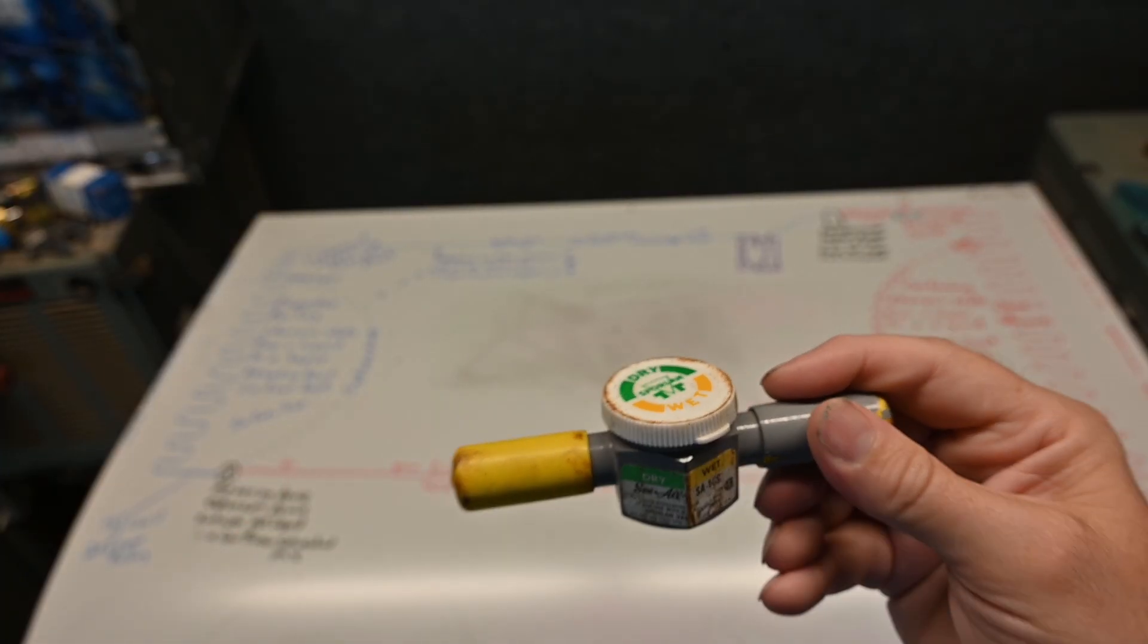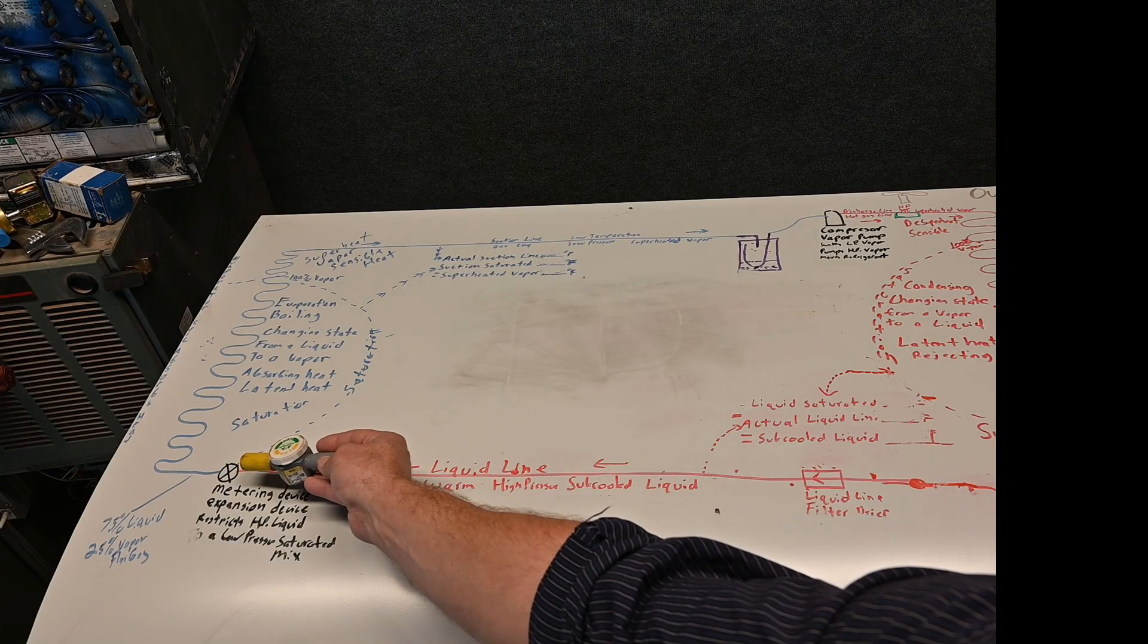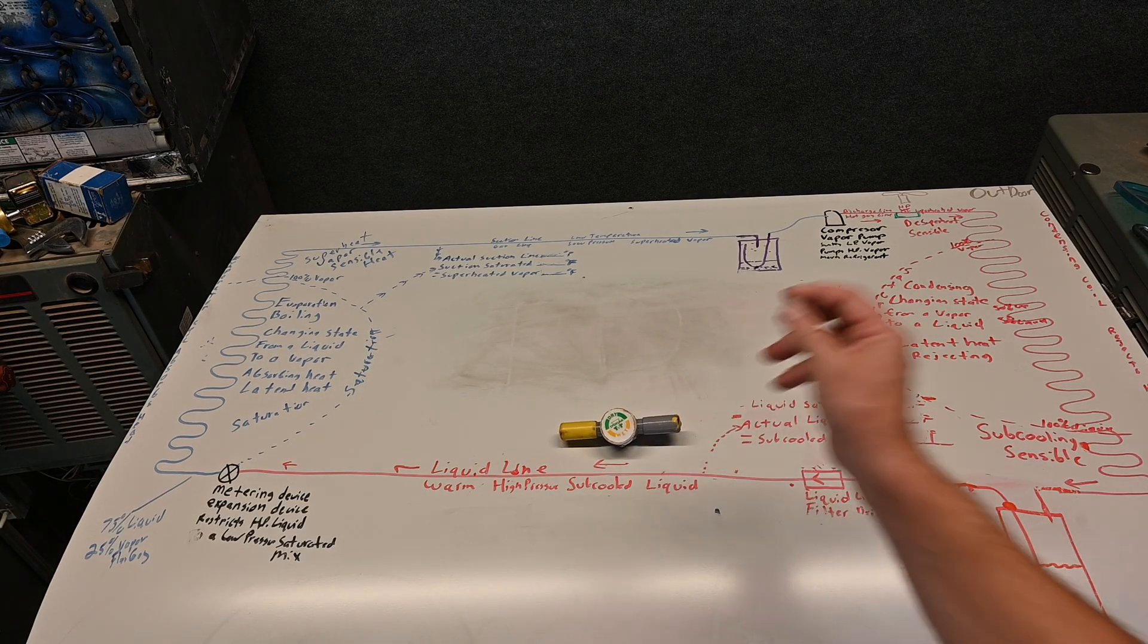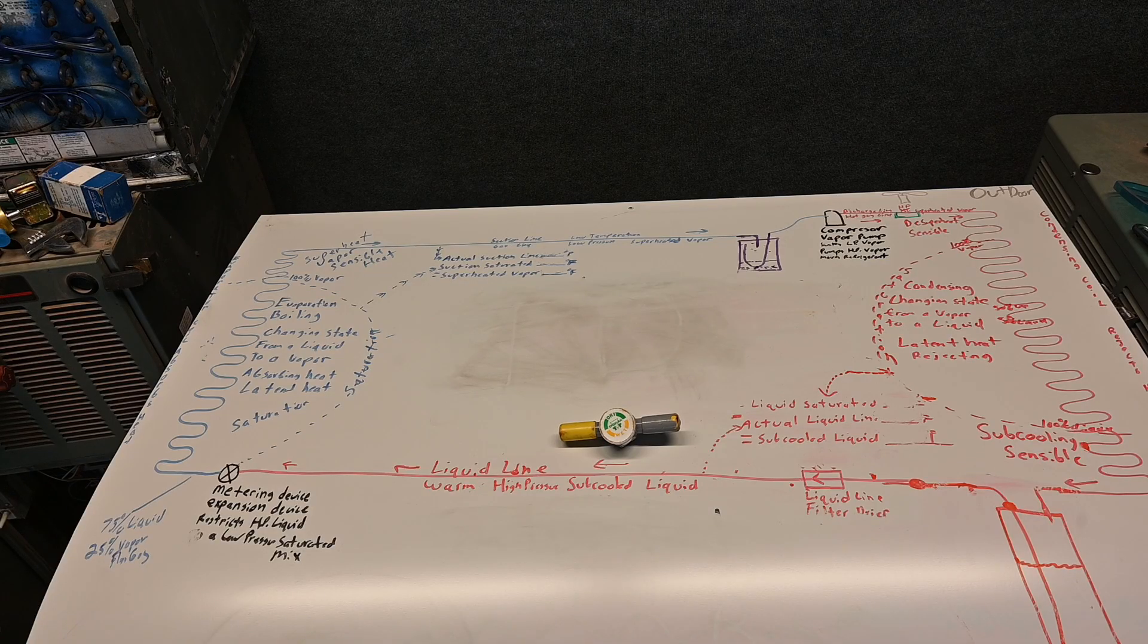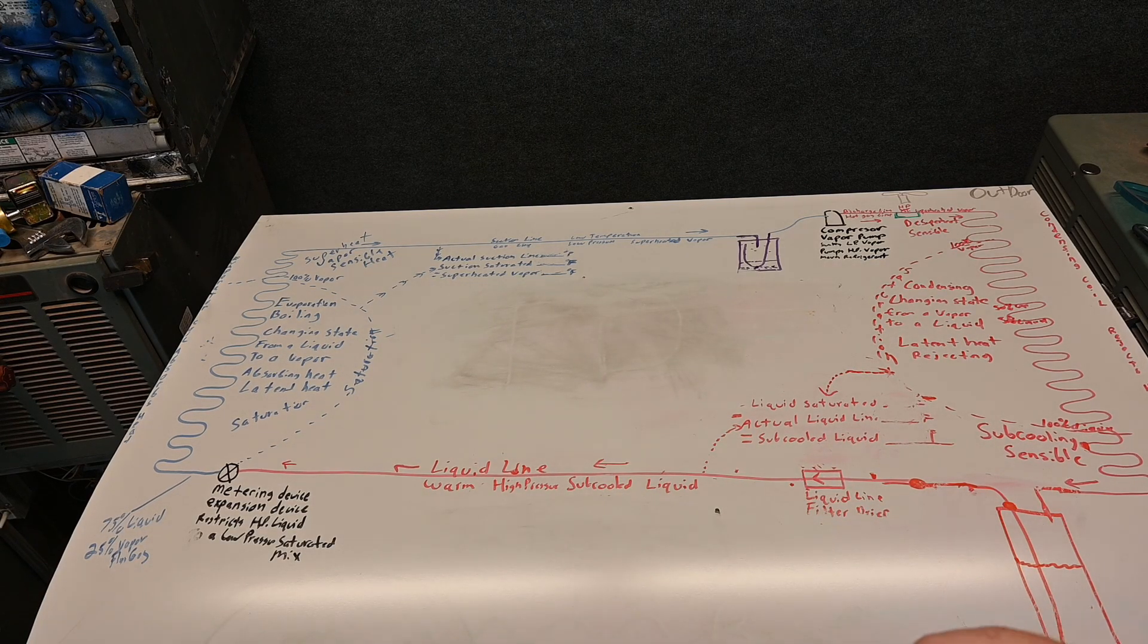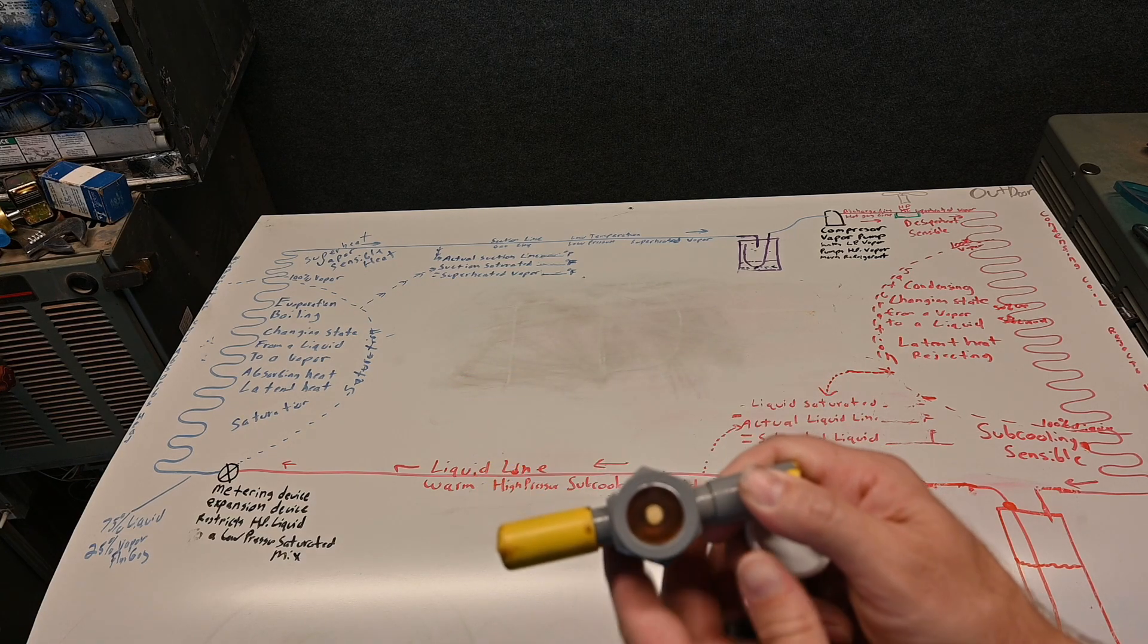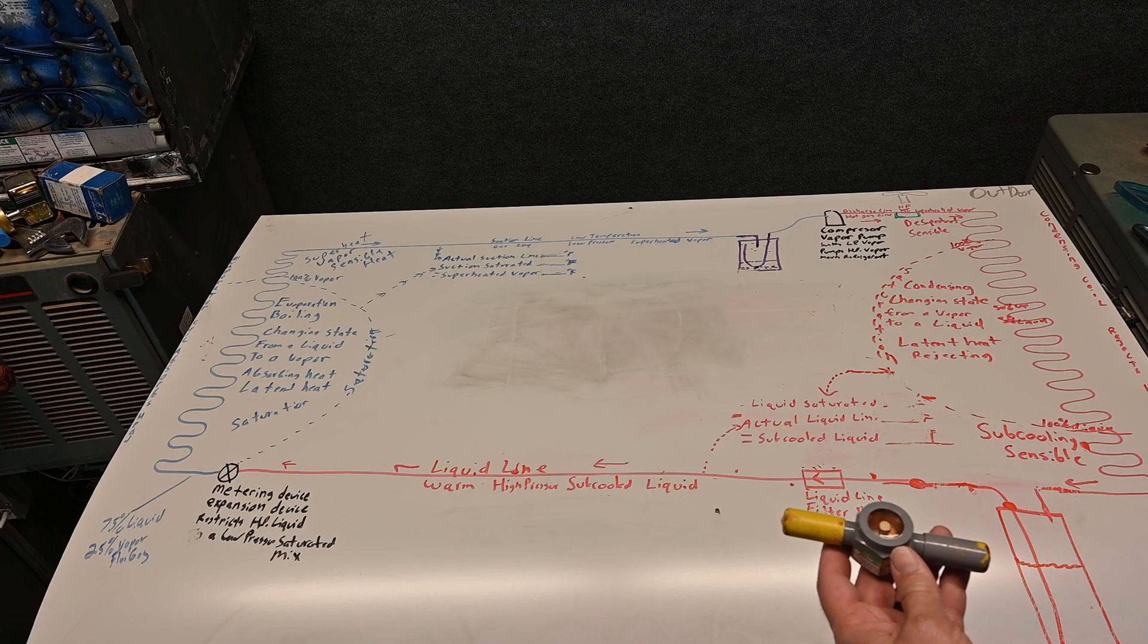So this sight glass on a refrigeration cycle anywhere in the liquid line even up to our metering device. The sight glass can be very useful for refrigeration, but for residential air conditioning it's not as much. The reason is, even though you have a solid column of liquid right here doesn't mean that you would have enough subcooling in the unit for the manufacturer specifications.